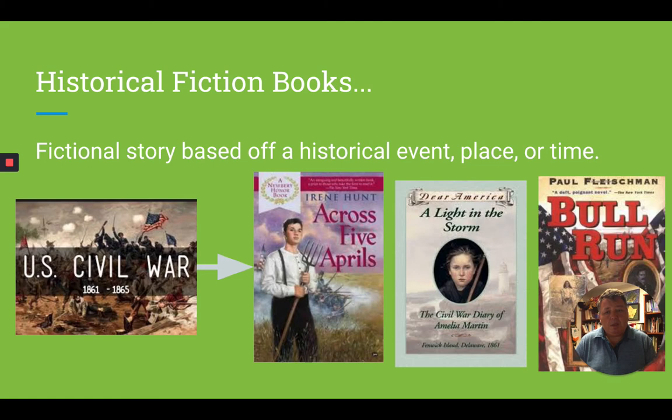The second category is just a little bit different: historical fiction. These are stories based off of real-life events like the U.S. Civil War, but the actual stories have been made up. They're based on real facts and may even be based on real people, like Bull Run is. But for the most part, it's a fictional story created about that event.